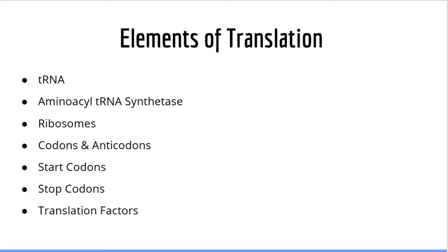In this video, we're going to introduce and describe the most important elements of translation. These include the structure and function of tRNAs, the function of the enzyme aminoacyl tRNA synthetase, the structure and function of ribosomes, codons, and anticodons. We will also talk about the start and stop codons, and lastly the proteins involved in translation which are called translation factors.